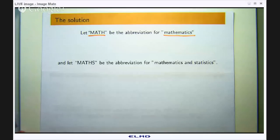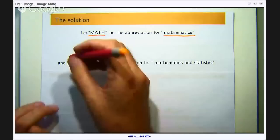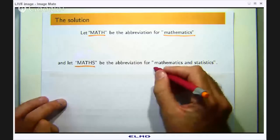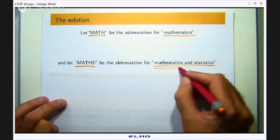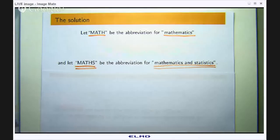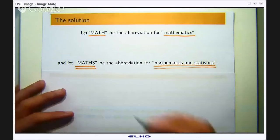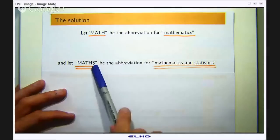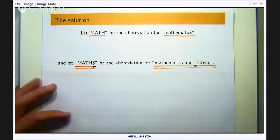And then we can let maths be the abbreviation for mathematics and statistics. So to differentiate between math and maths, the S stands for statistics. That's the angle that hasn't really been discussed yet, and I think it's an interesting angle. So the S in maths stands for statistics.